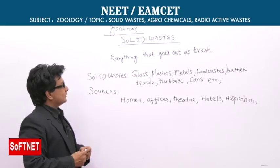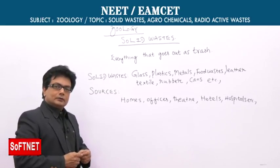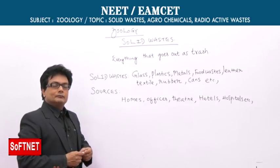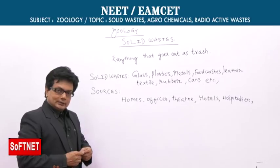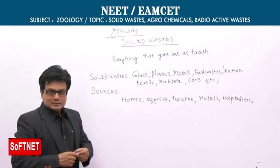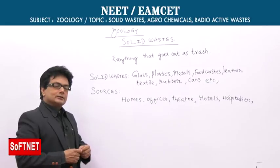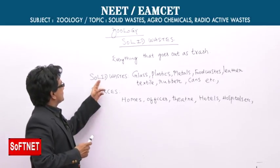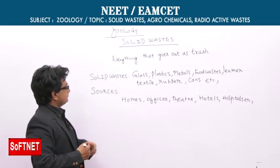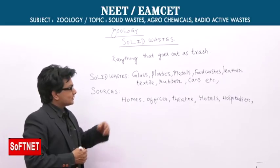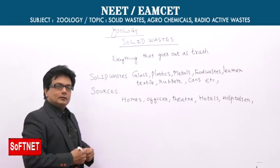So, what is solid waste? Solid waste is everything that goes out as trash. Let's see what are the different types of things which can be called solid waste: glass, plastic, metals, food wastes, leather, textile, rubber, cans, etc.